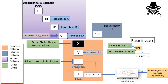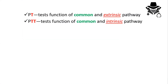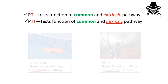Before discussing the last two drugs, let's cover important tests. PT — prothrombin time — tests the function of the common and extrinsic pathways. PTT — partial thromboplastin time — tests the function of the common and intrinsic pathways. Both test the common pathway, but PT is for the extrinsic and PTT is for the intrinsic.